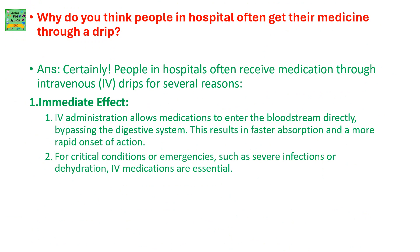Why do people in hospital often get their medicine through a drip? Certainly, people in hospital often receive medication through intravenous IV drips for several reasons. Immediate effect: IV administration allows medications to enter the bloodstream directly, bypassing the digestive system. This results in faster absorption and a more rapid onset of action. For critical conditions or emergencies such as severe infections or dehydration, IV medications are essential.